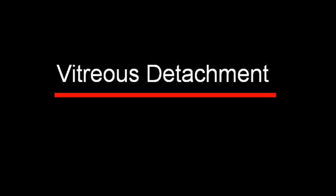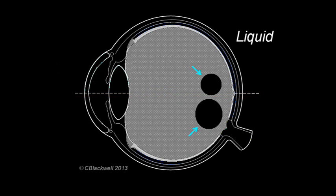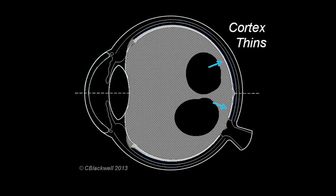Our next subject is not retinal detachment, but vitreous detachment. In addition to the vitreous liquefying, the vitreous cortex begins to thin, and it becomes less strongly attached to the retina.